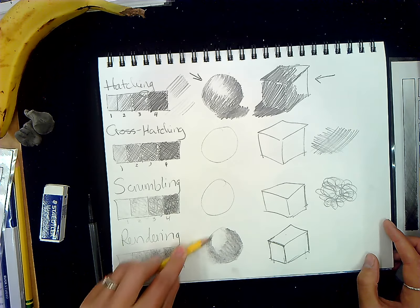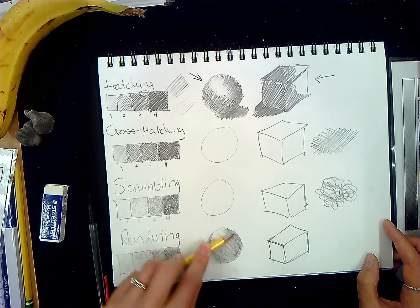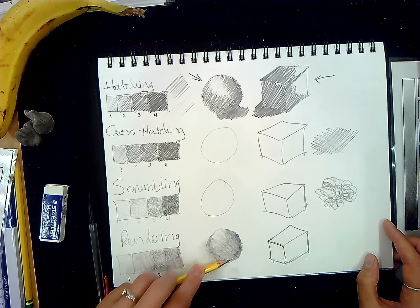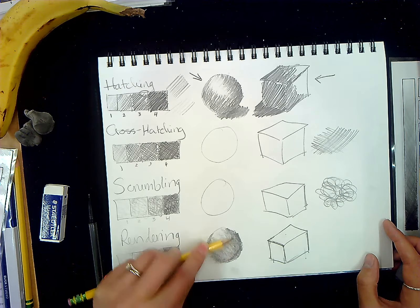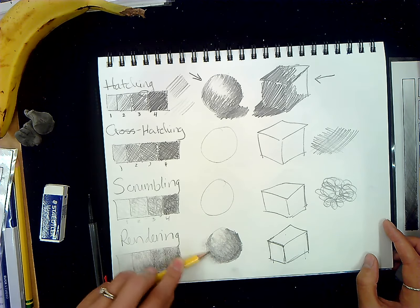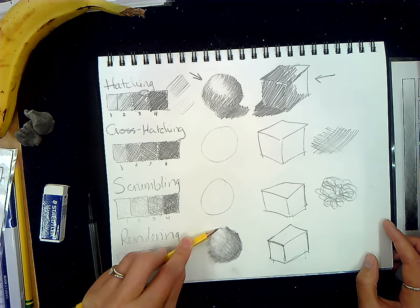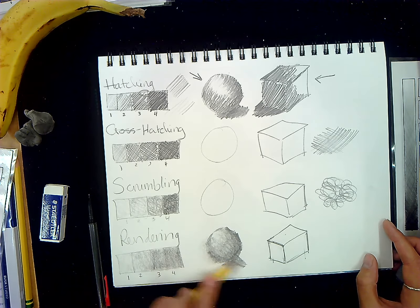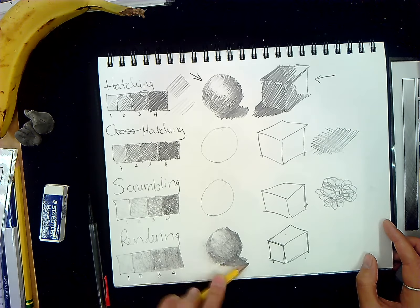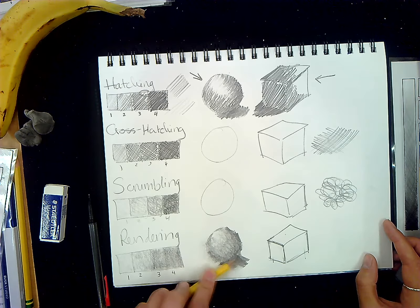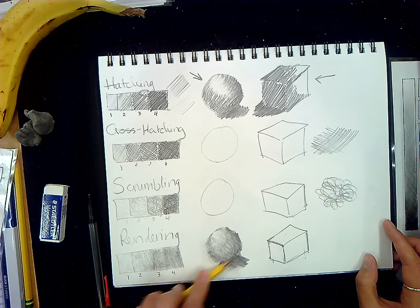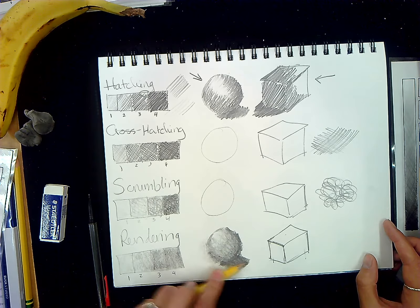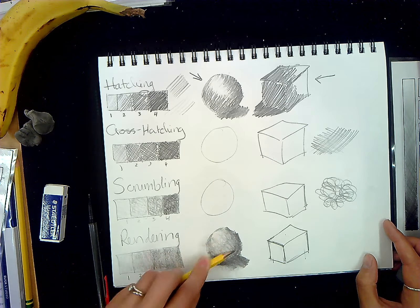Pressing, trying to get my highlight, trying to get my midtone, trying to get my overtone, which is my darkest. And then putting down my cast shadow. Remember, the cast shadow should be the darkest value. If your cast shadow is looking about the same level of darkness as your darkest tone, maybe go back and darken up your cast shadow a little bit.